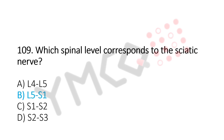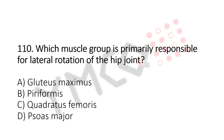Now let's move to question number 110. Which muscle group is primarily responsible for lateral rotation of the hip joint? Option A, gluteus maximus. Option B, piriformis. Option C, quadratus femoris. Option D, psoas major. And the answer is Option B, piriformis.